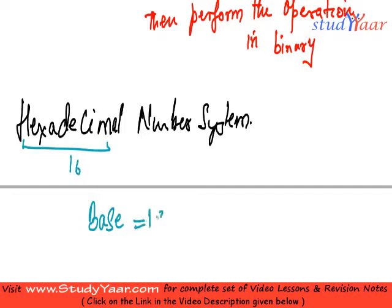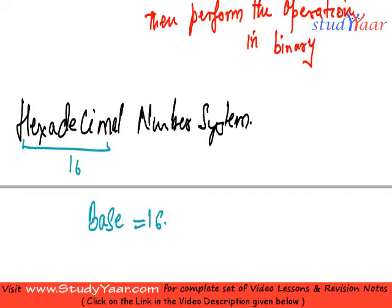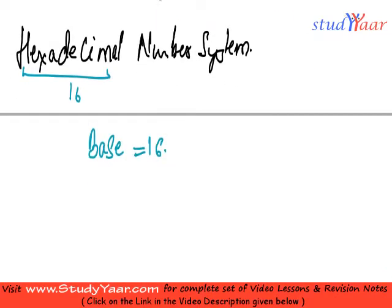My base is equal to 16. I have 16 allowable symbols which are 0 to 9 and I have A, B, C, D, E and F. My A represents 10 in decimal, B represents 11 in decimal, C represents 12, 13, 14 and 15. 0 to 15, how many symbols? 16 symbols.